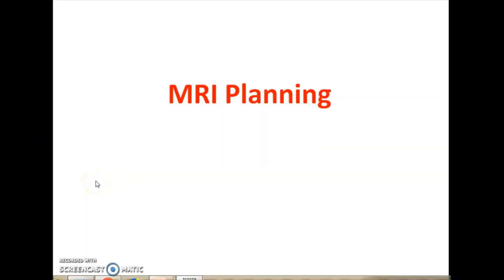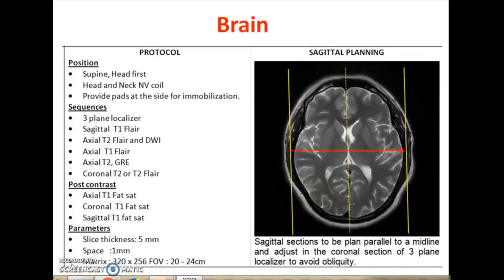What is the planning and positioning of the various anatomical parts in the following slides? We start with the BRAIN. The patient position is supine and head first, and the NV coil is used. These are the protocols we have used in our department: we start with the three-plane localizer, followed by FLAIR, SPGR T1, Axial, Axial T2. This is not common for all departments; each department has their own protocols, but this is the protocol in our department.